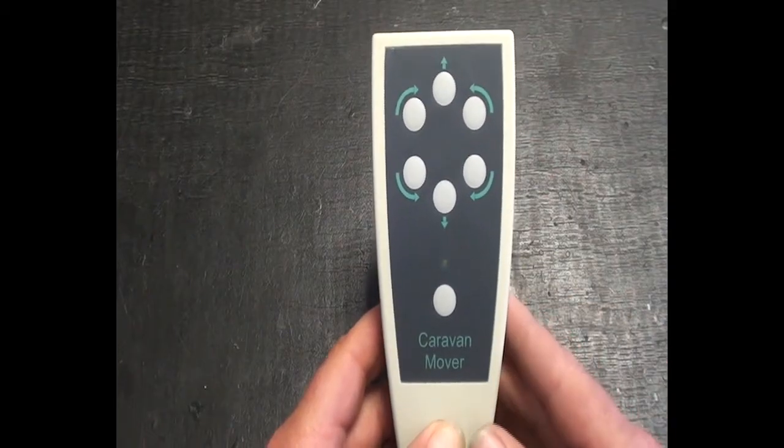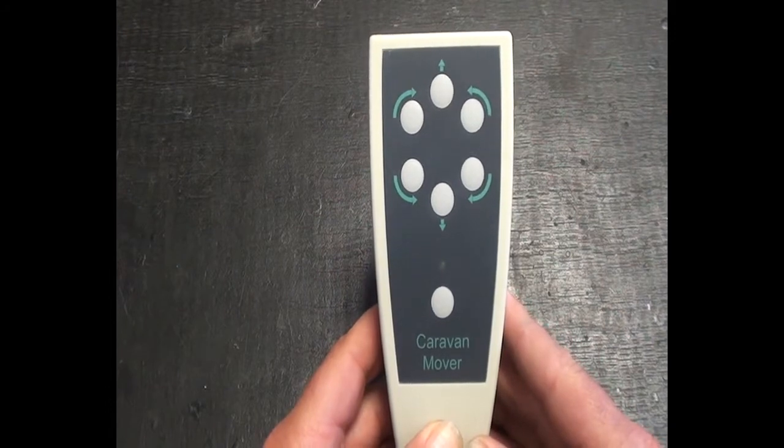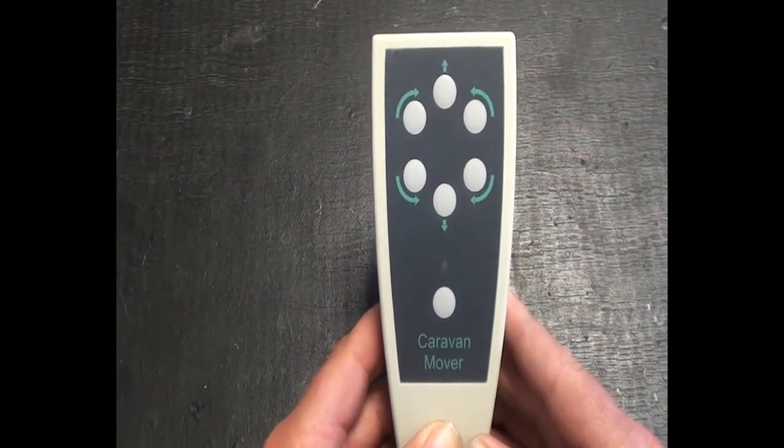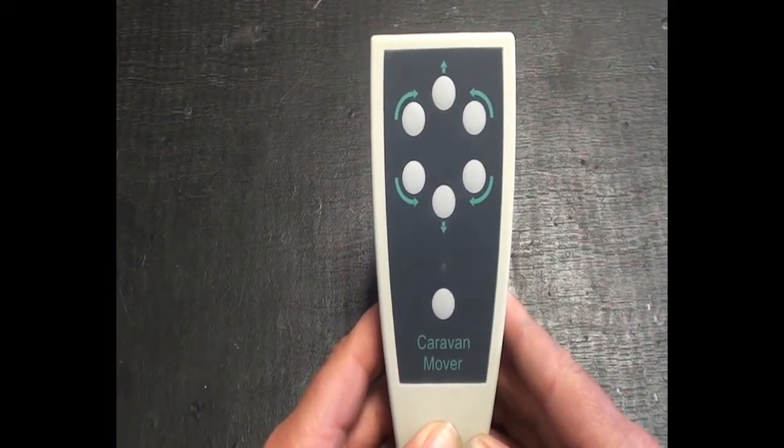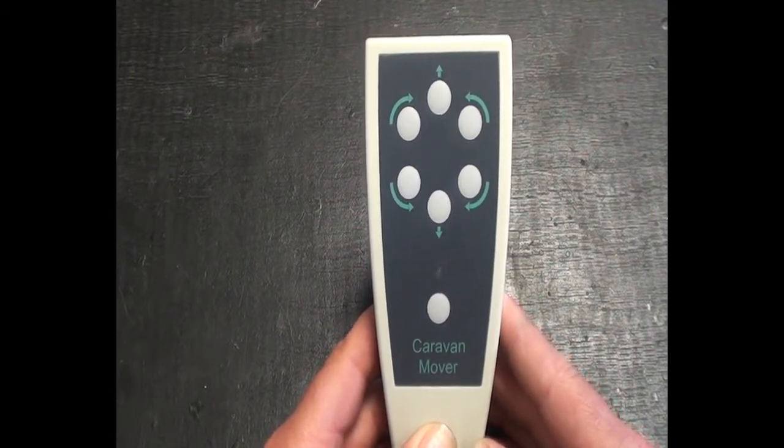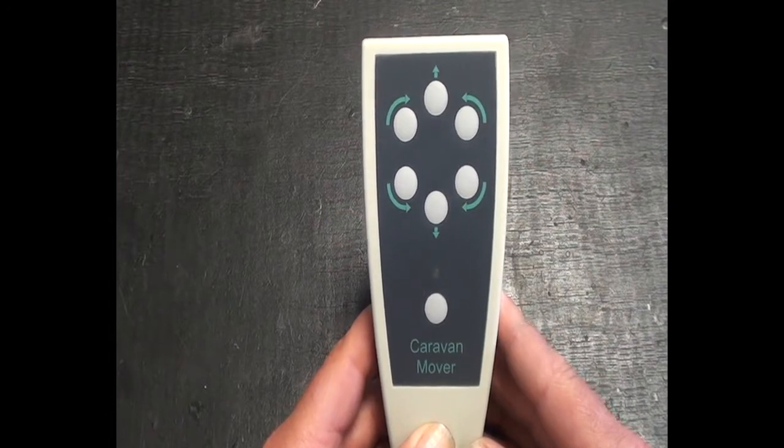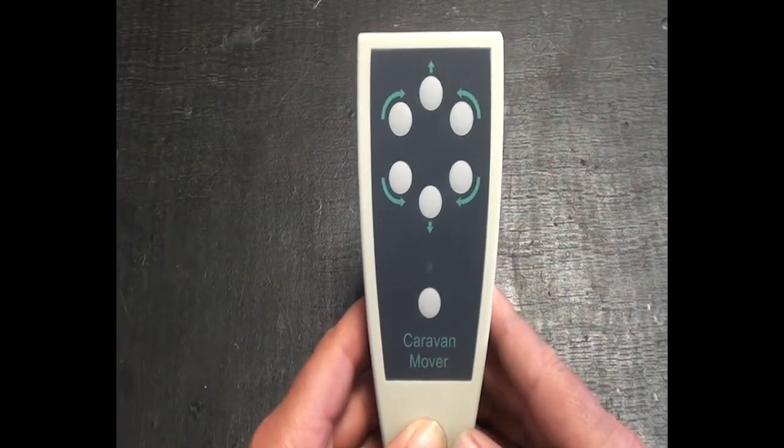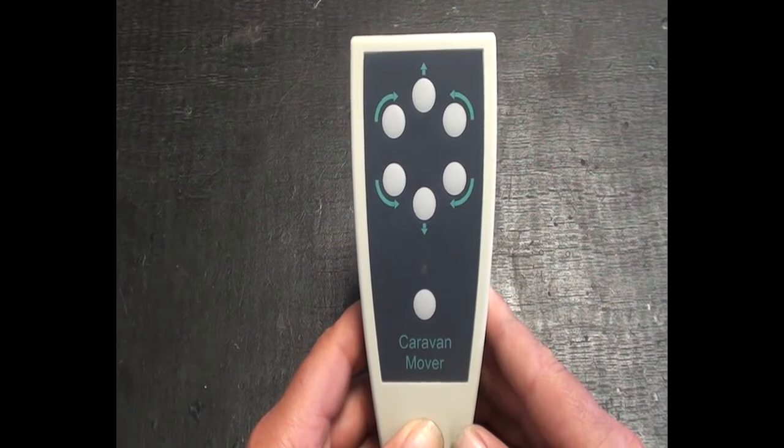The first stage is to set the handset up to be program number 3. Bear in mind it may be a different number for your particular power touch as there are T spec variants and single and twin axle variants, but in our case I am going to show you to set up for program number 3. The procedure is the same, just the amount of flashes are different.